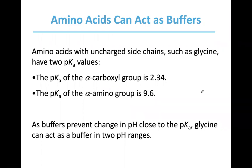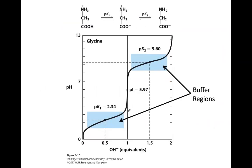Both the carboxylate and amino group, when protonated, are weak acids. A mixture of a weak acid and its conjugate base can serve as a buffer, so amino acids can be used as buffers. There are two buffer regions: one centered around pH 2.34 for the carboxylic group, and another centered around pH 9.6 for the amino group.